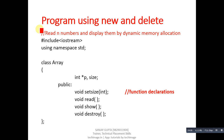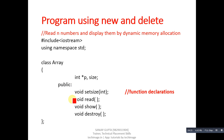Now I'm going to discuss a program implemented using new and delete operators. The objective is to read N numbers and display them using dynamic memory allocation. A header file and namespace are used, then a class named 'array' is defined. The private attributes are int pointer p and size. In the public section, four functions are declared: setSize, read, show, and destroy. setSize handles memory allocation, destroy handles deallocation, read reads elements, and show displays them.